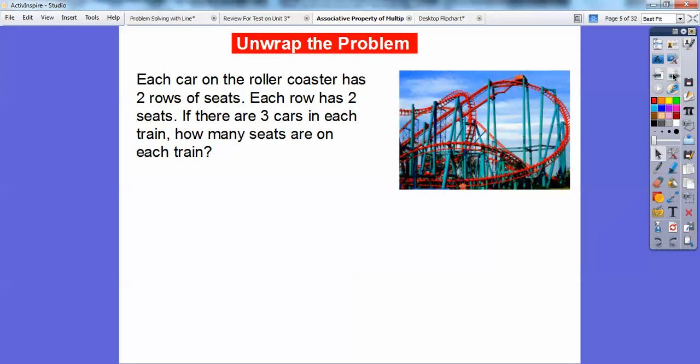So for example, here's an example, each car on a roller coaster over here has two rows of seats. So imagine you've got a little car that you sit in, and there's two rows of seats. Each row has two seats. So there's two rows with two seats. So that means there's four seats in each car. If there are three cars on the train, on each train, how many seats are on each train?